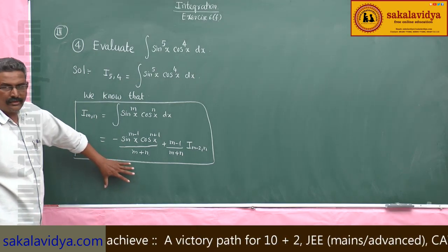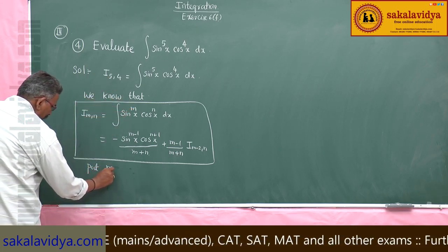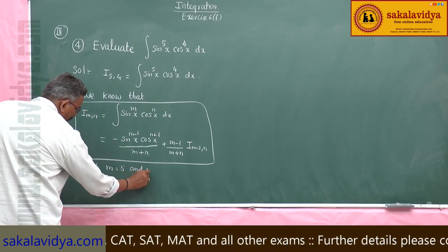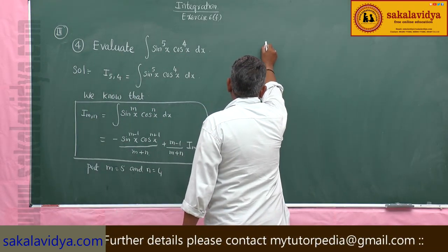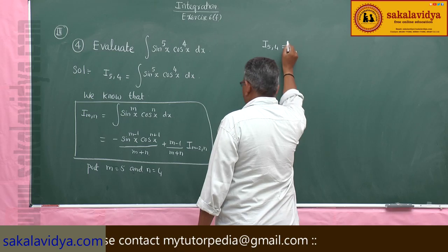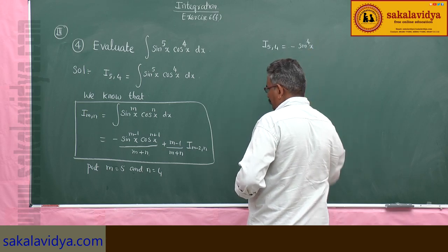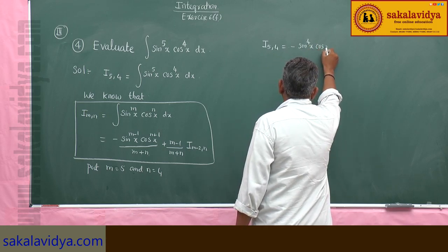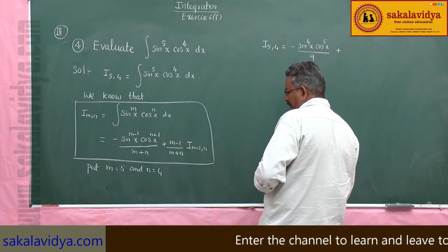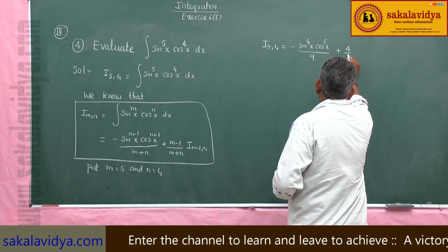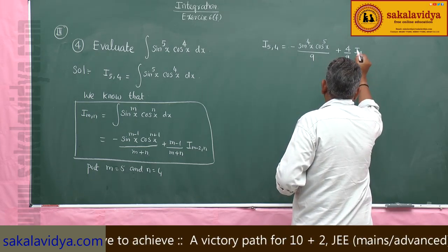In this formula, put m equal to 5 and n equal to 4. We get: I(5,4) is equal to minus sin x to the power of 4, cos x to the power of 5, divided by 5 plus 4 which is 9, plus m minus 1 which is 4, over 9, times I(m−2, n) which is I(3, 5).